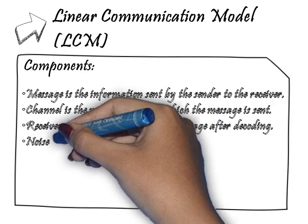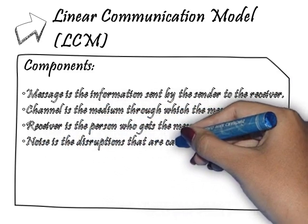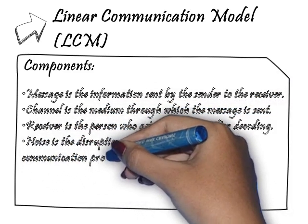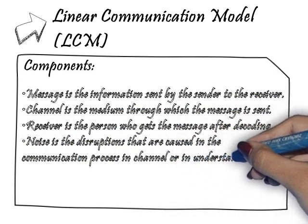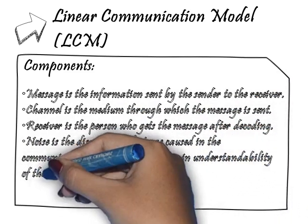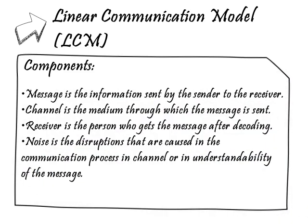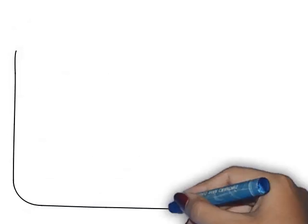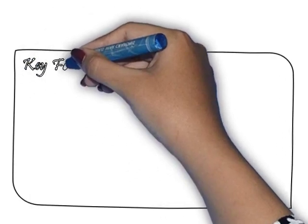Linear communication is a one-way process. It is commonly used in mass communication, in settings of propaganda, and in persuading people. It can be used in mass communication or in interpersonal or group communication.